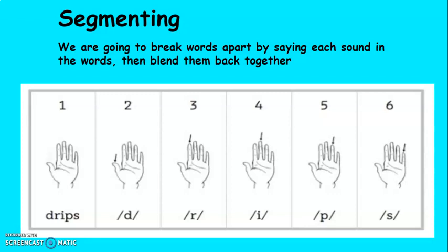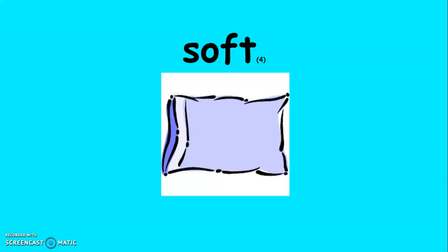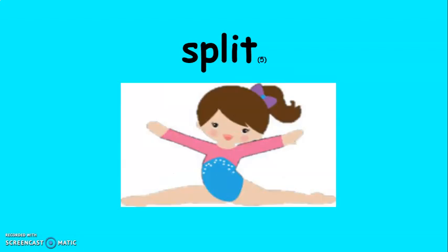DRIPS. D-R-I-P-S. DRIPS. This word is a four-sound word. SOFT. S-O-F-T. SOFT. This word is a five-sound word. SPLIT. S-P-L-I-T. SPLIT.